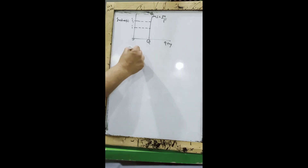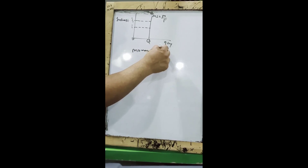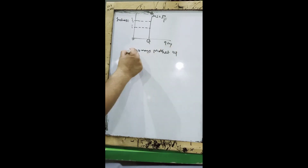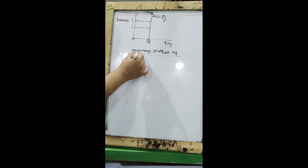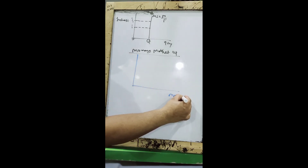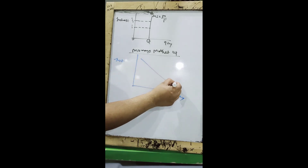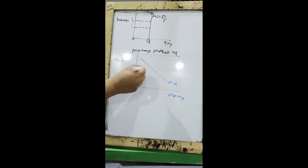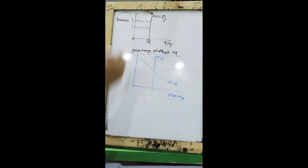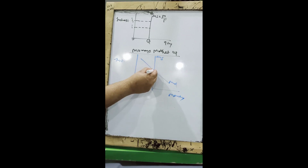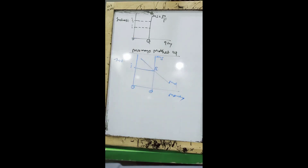Now I will explain how to achieve money market equilibrium — please do not confuse this with the LM curve, which is something else that we will study later. With the quantity of money on one axis and the nominal rate of interest on the other, the MD curve is downward sloping and the MS curve is vertical. Their intersection determines the rate of interest in the money market.